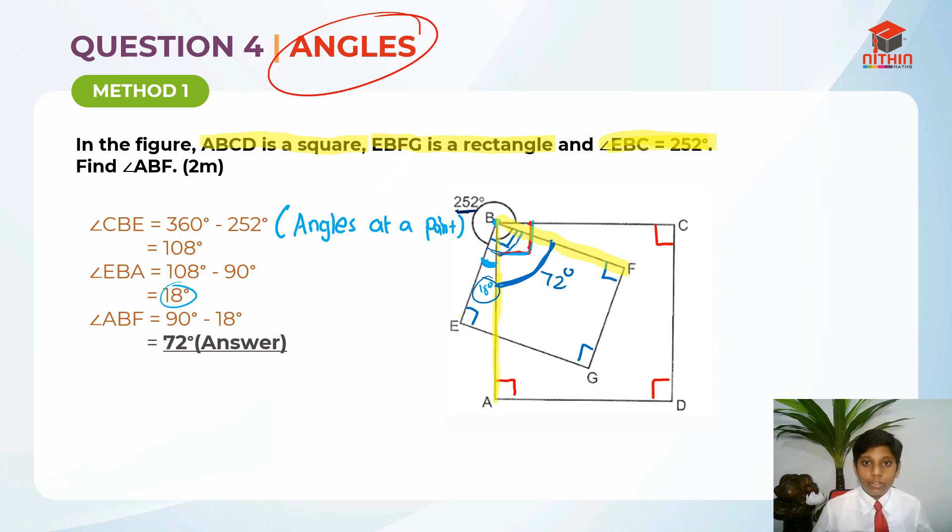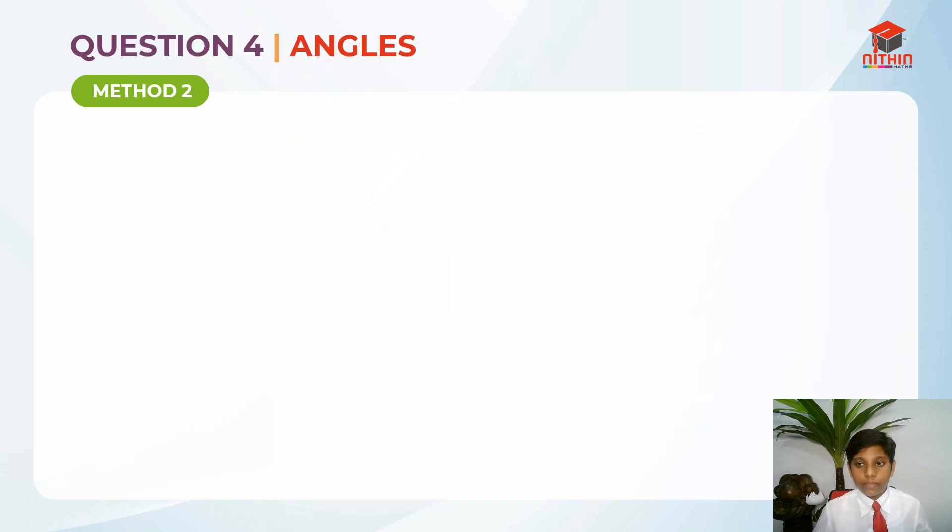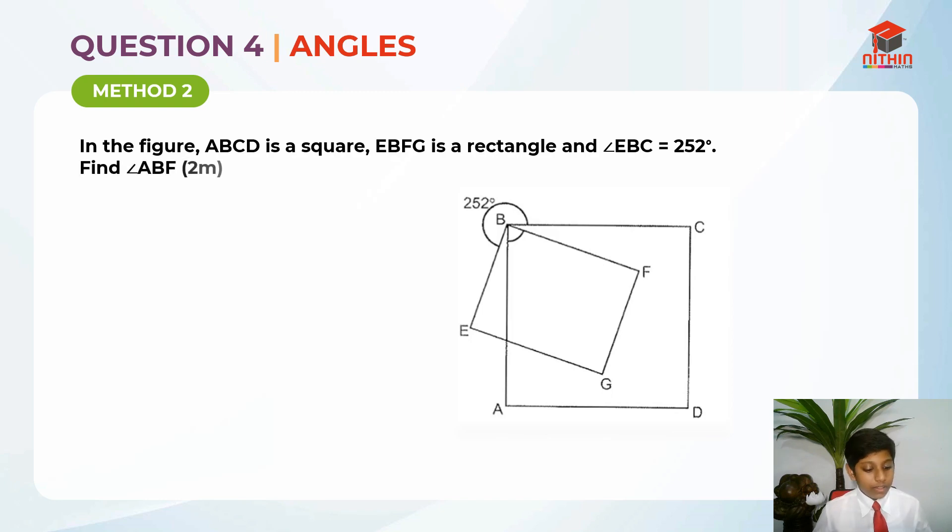Let's move on to method 2 on solving this question. It's the same question. The first part is the same as the last one. We find CBE. We find the same old thing. CBE, we find this part. The next one is a different step. It may look similar, but it's different. 108 minus 90 degrees to find angle FBC.